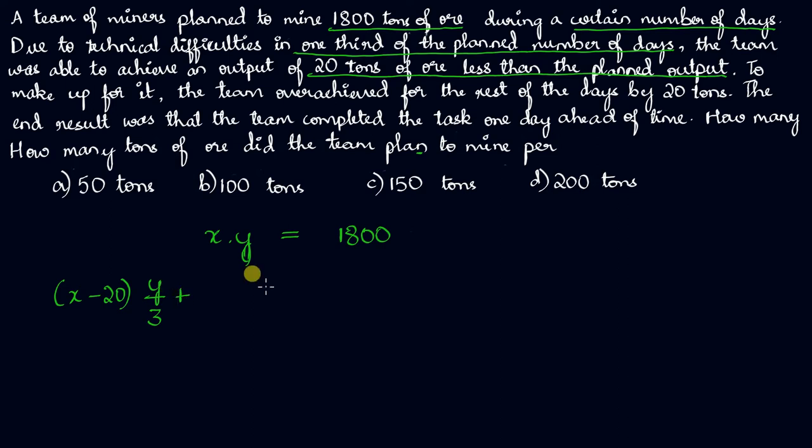They tried to make up for it and they overachieved for the rest of the days. The rest of the days is two y by three. Y by three days was slow, but the rest, two y by three of the days, was fast. They started to overachieve the target, and they overachieved it by 20 tons, which means that if they had planned x, they took x plus 20 as the target for the rest of the two y by three days. As a result, they were able to complete the task one day ahead of time.